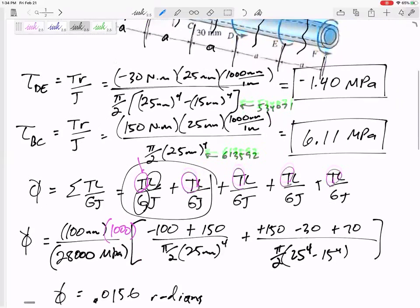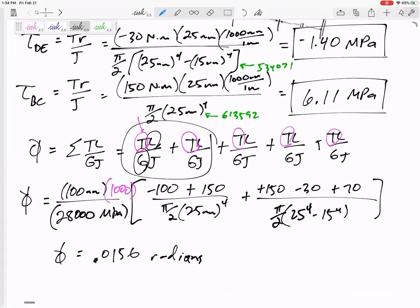TL over GJ gives you, spits out your answer in radians. But I explicitly asked for it in degrees. So from radians to degrees, 360 over 2 pi, 0.0895 degrees.